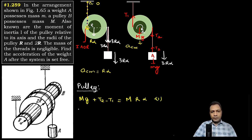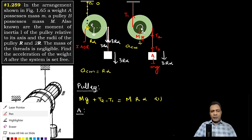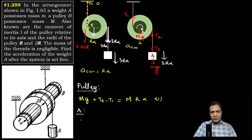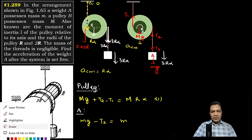For block A, applying F_external = m·a: the weight is small mg downward and tension T2 acts upward, so mg minus T2 = m·(3r·alpha). This is the second equation.